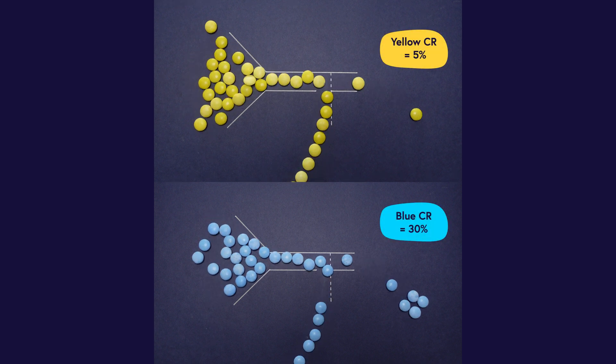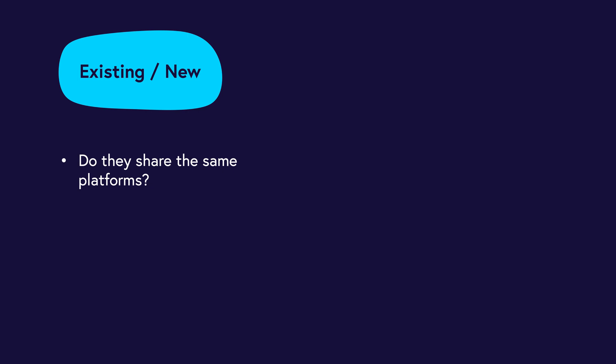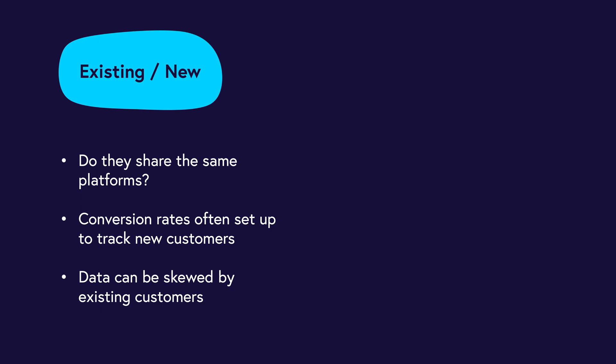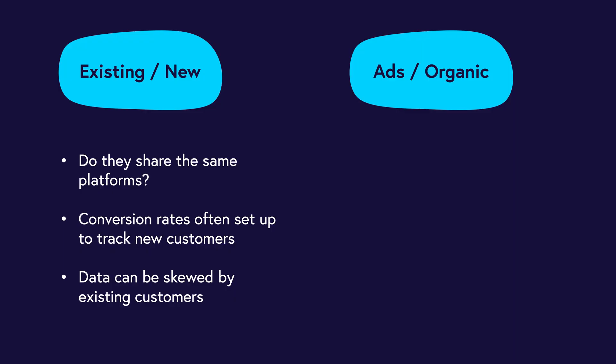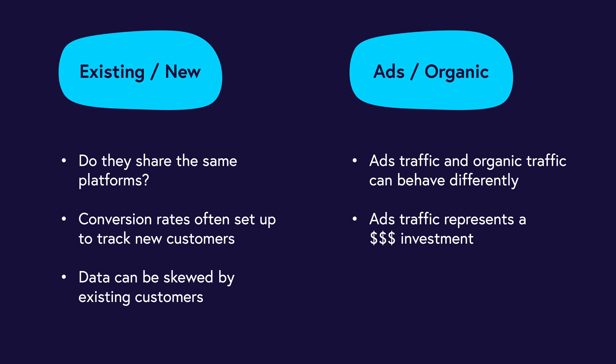You don't always need to segment, but some of the best insights come from segmenting your audience and looking at conversion rates separately. Two cases where it nearly always makes sense to segment: first, existing customers versus new customers — if your site is used by both, you'll want to view their behaviour separately, as existing customers returning to a platform will skew the data. Second, ad traffic versus organic traffic — ads traffic performs very differently from organic, and since you're paying for it, there's a greater need to track its conversion rate separately.